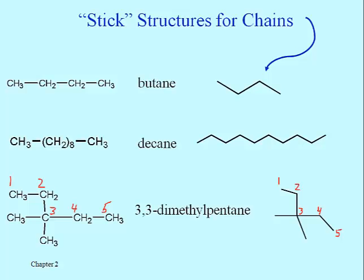Here's the same slide from the end of that last segment. I've used the red numbers here to indicate how we number that compound at the bottom, because its parent chain is not drawn just horizontally with all the atoms in a straight line. Our rules tell us to find the longest sequence of carbons and let that be the basis of how we name it. That's why this one at the bottom is named as a pentane — I can count out five carbons in sequence instead of just four, and I can even do that with a stick figure over here.